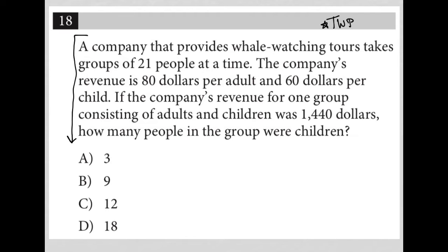The first sentence says a company that provides whale-watching tours takes groups of 21 people at a time. I'm going to write 21. The company's revenue is $80 per adult and $60 per child. That tells me the 21 people is a mixture of adults and children, so I'm going to say 21 equals A plus C.